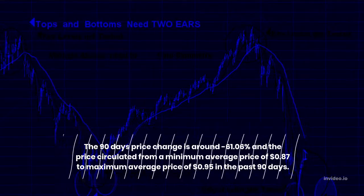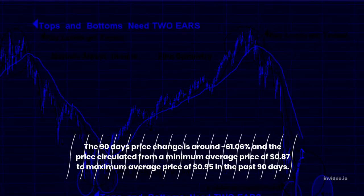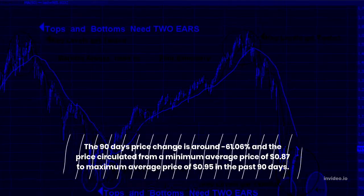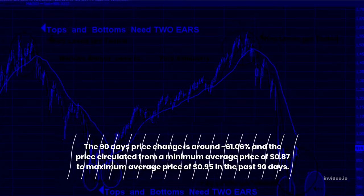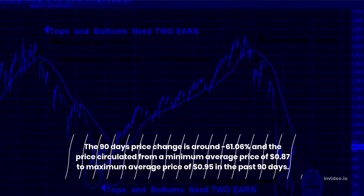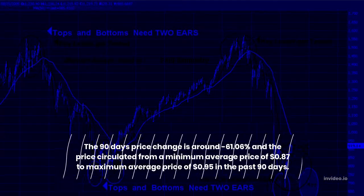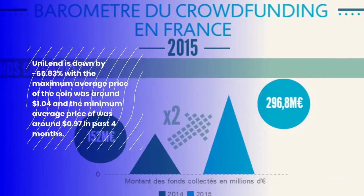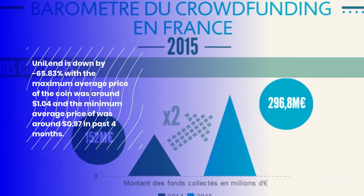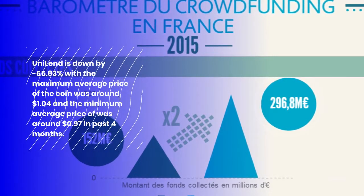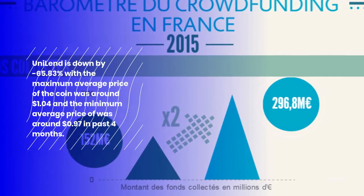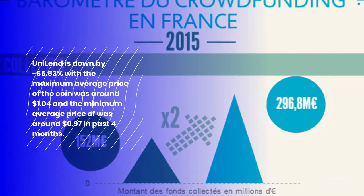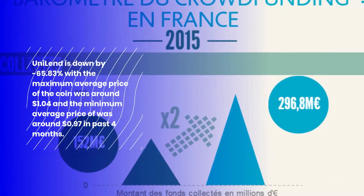The 90-day price change is around minus 61.06% and the price circulated from a minimum average price of $0.87 to a maximum average price of $0.95 in the past 90 days. Uniland is down by minus 65.83%, with the maximum average price of the coin around $1.04 and the minimum average price around $0.97 in the past 4 months.